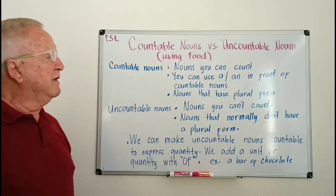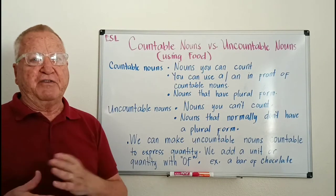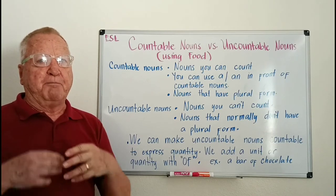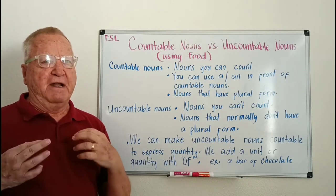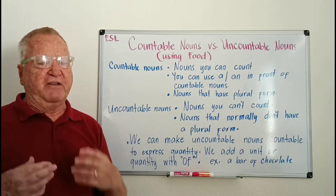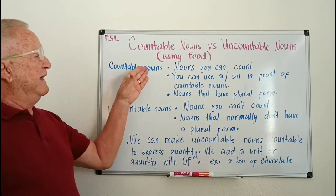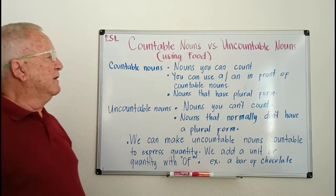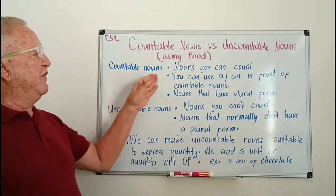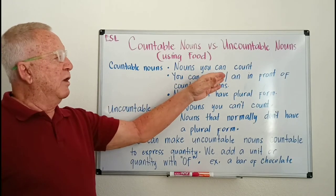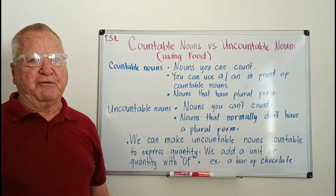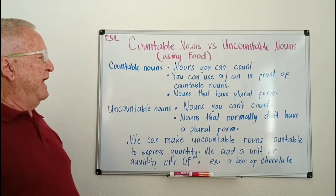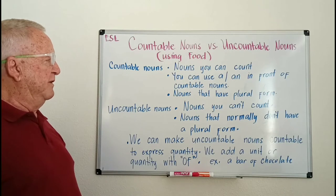A countable noun is a noun — a person, place, or thing — that you can count. You can use 'a' or 'an' in front of a countable noun, and it has a plural form.